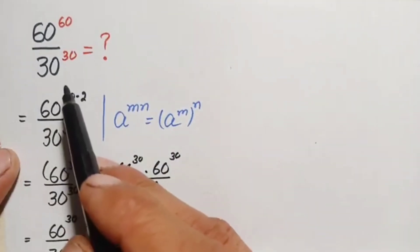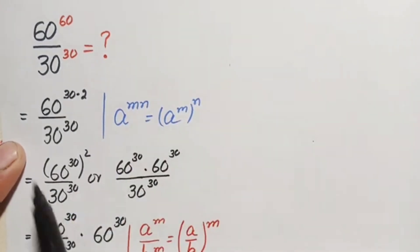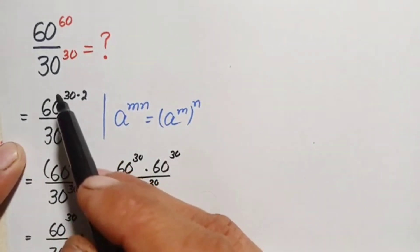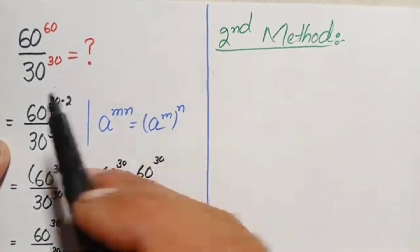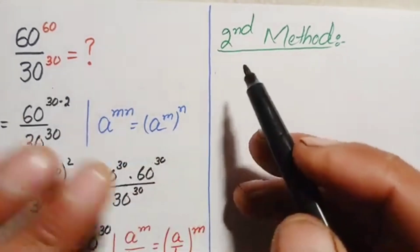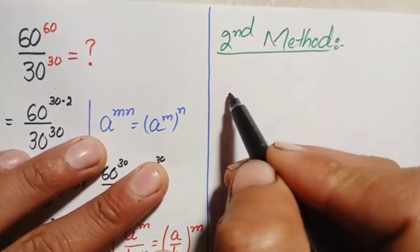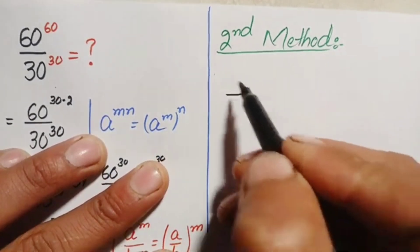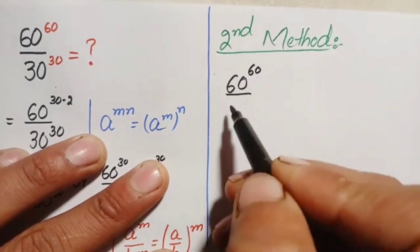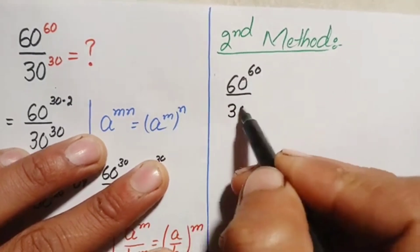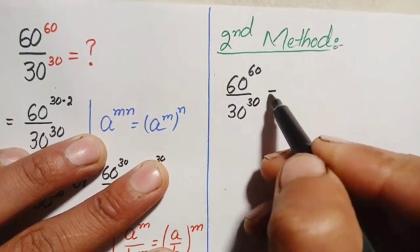So 120 raised to power 30 is our answer for this interesting exponential division problem. Now we will solve this using the second method. We write the problem again: 60 raised to power 60 divided by 30 raised to power 30.